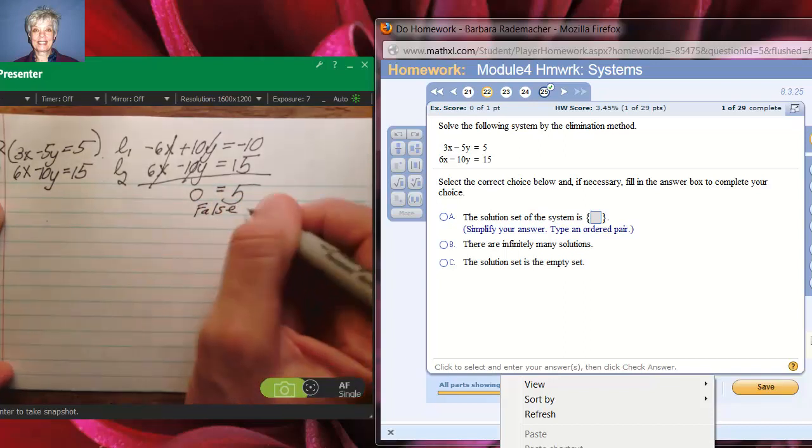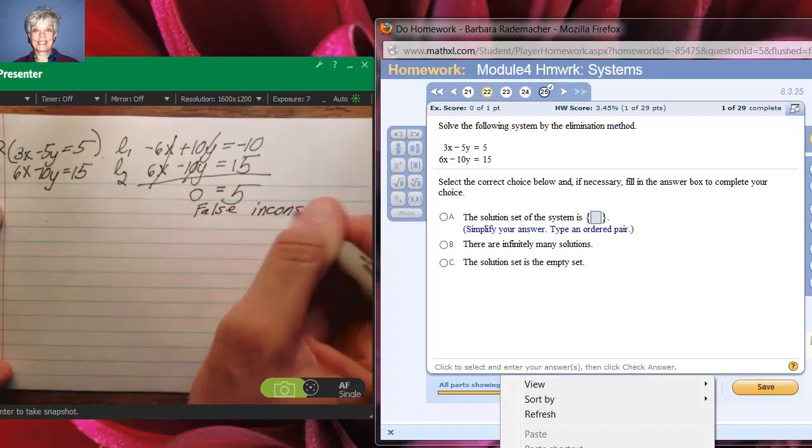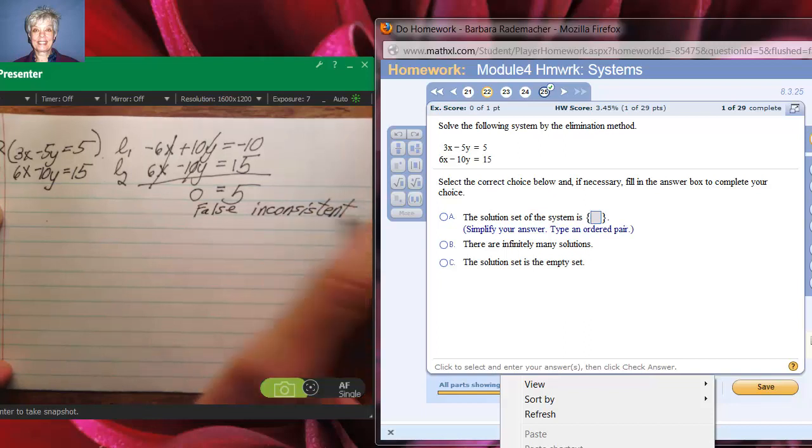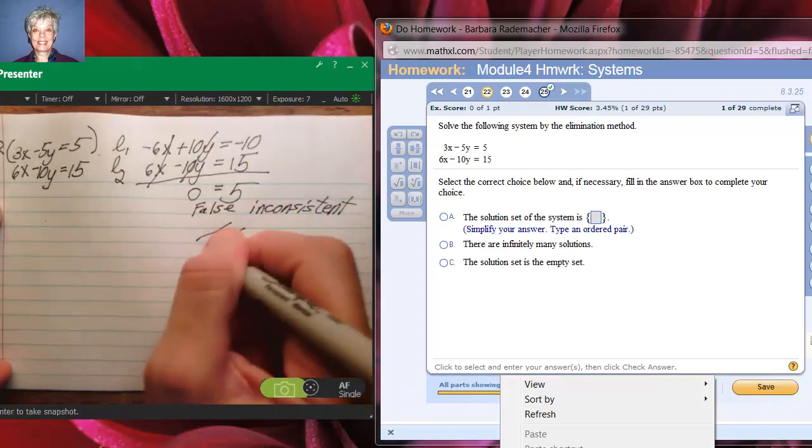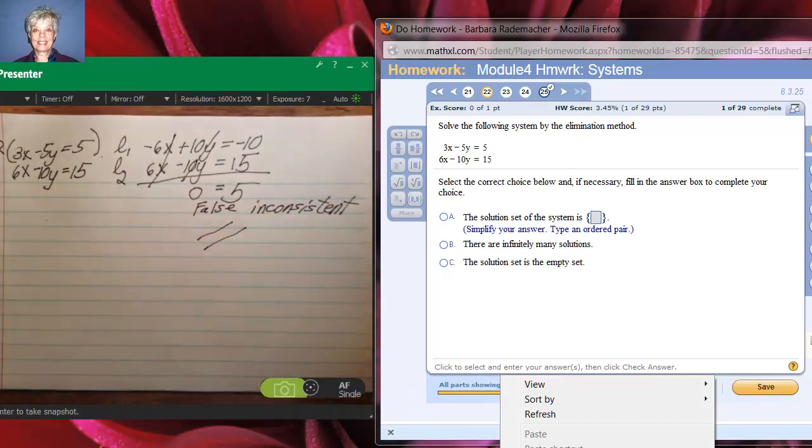Which means I have an inconsistent system here. That means I've got two parallel lines going on. They never cross. There are no solutions. So when it comes to picking an answer, I would choose C. The solution set is the empty set.